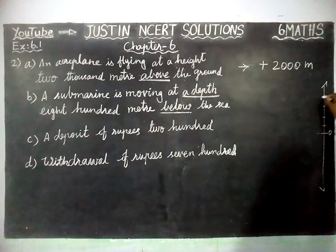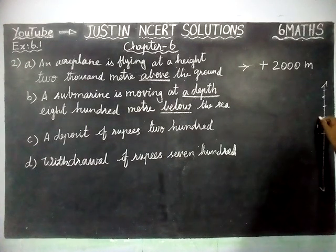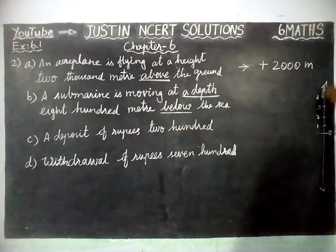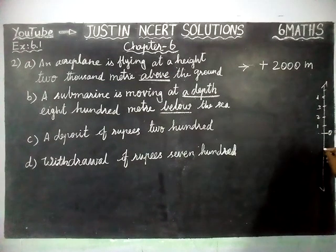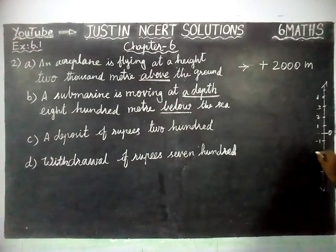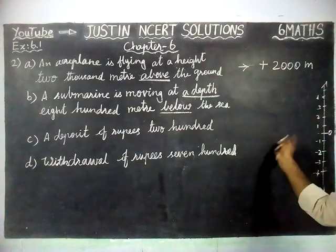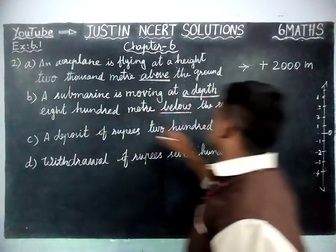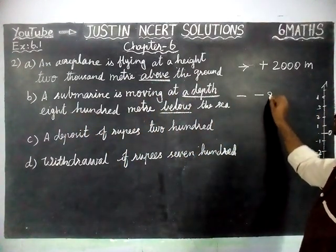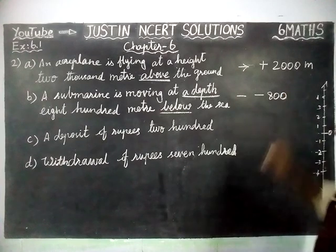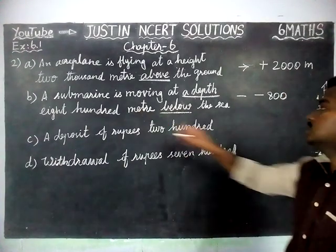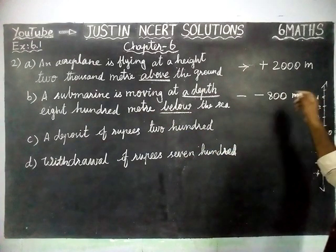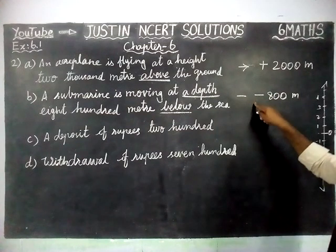Below sea level, those are negative numbers: minus 1, minus 2, minus 3, minus 4. So below sea level is negative. Therefore the answer is minus 800 meters.